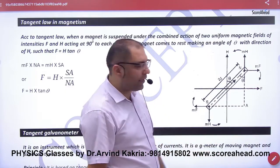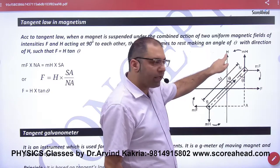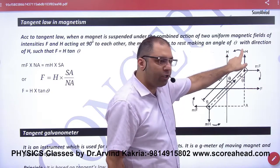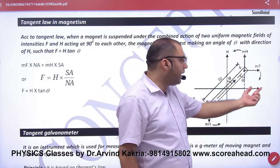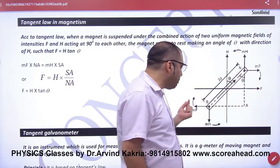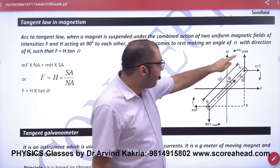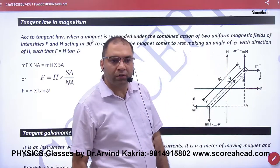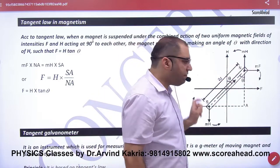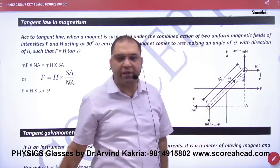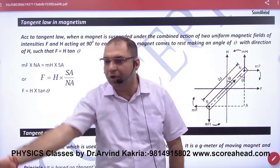Torque acts on the pole strength. The field on one side is H, so the couple is M into H. The field on the other side is F, so the couple is M into F. The couple MH and MH will try to rotate the magnet one way, and MF and MF will try to rotate it the other way. But it doesn't fully rotate — meaning clockwise torque balances anti-clockwise torque.